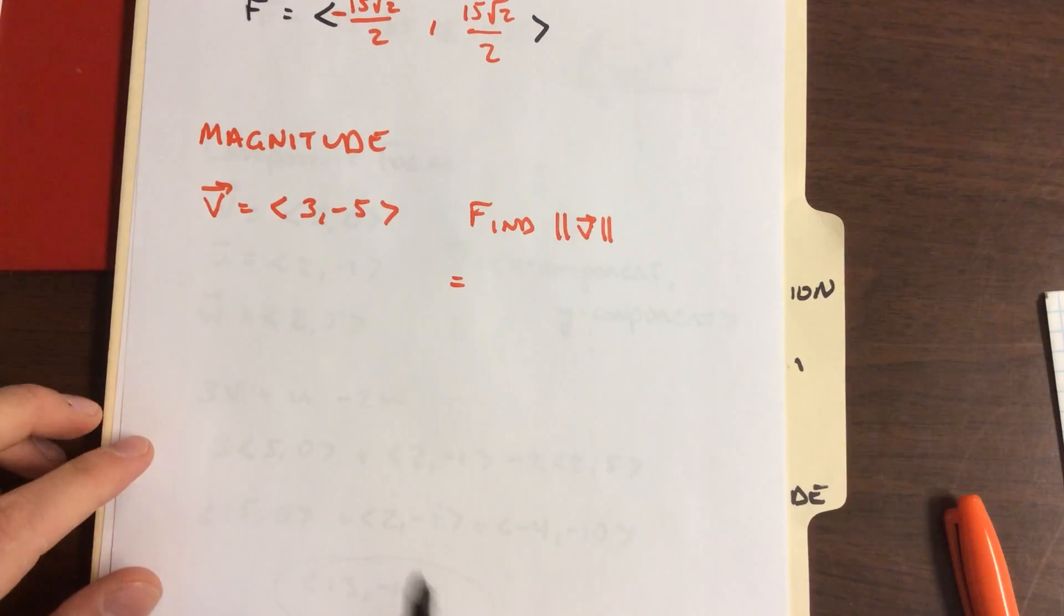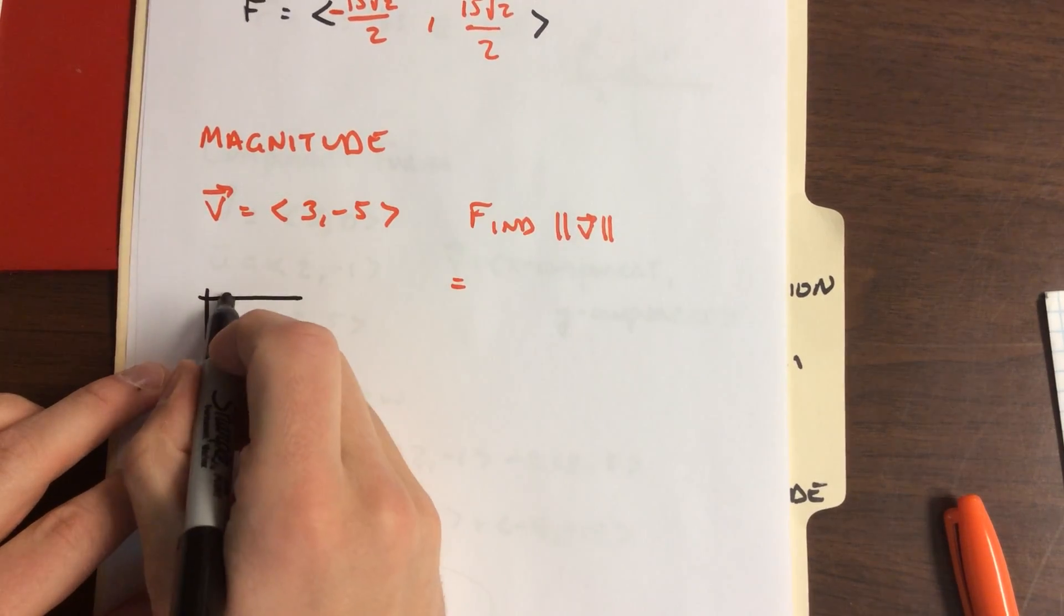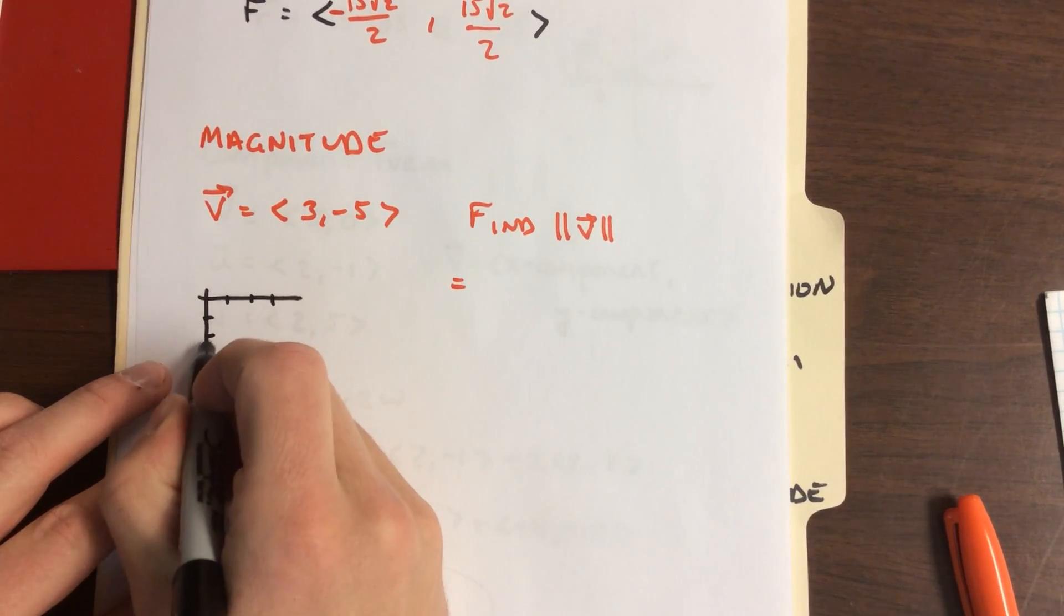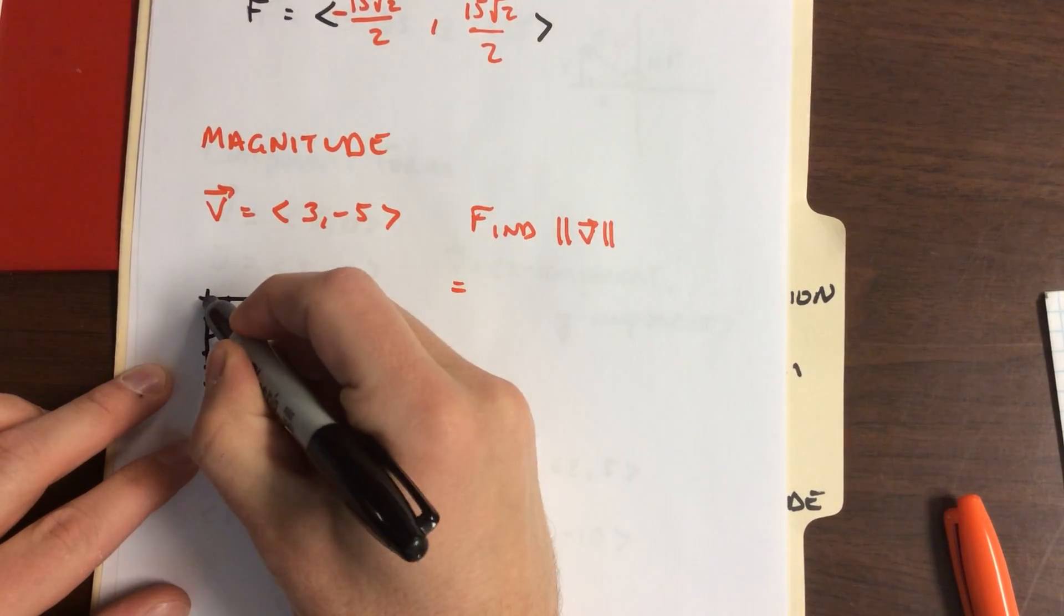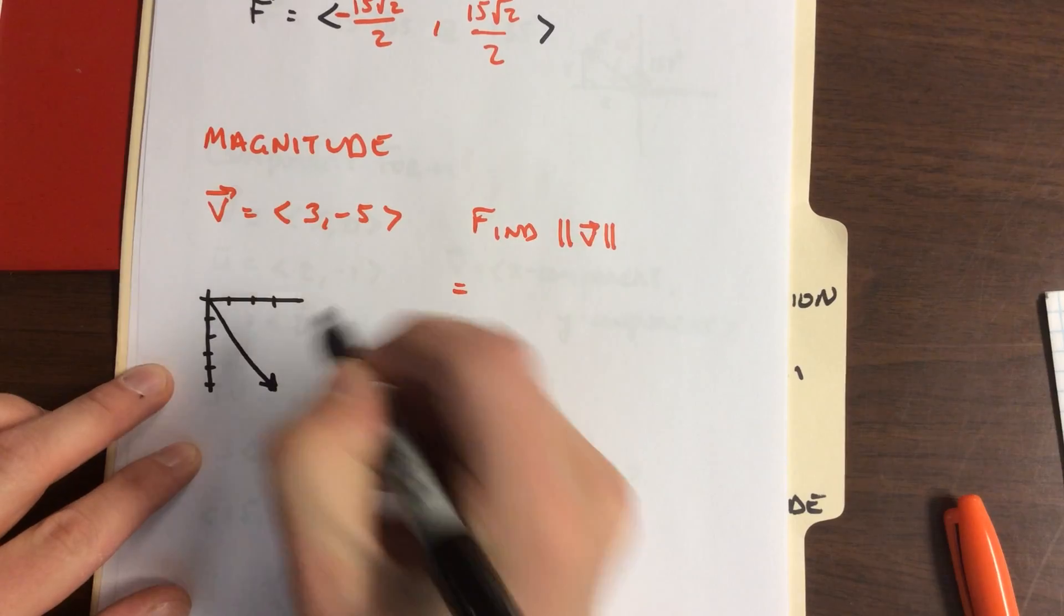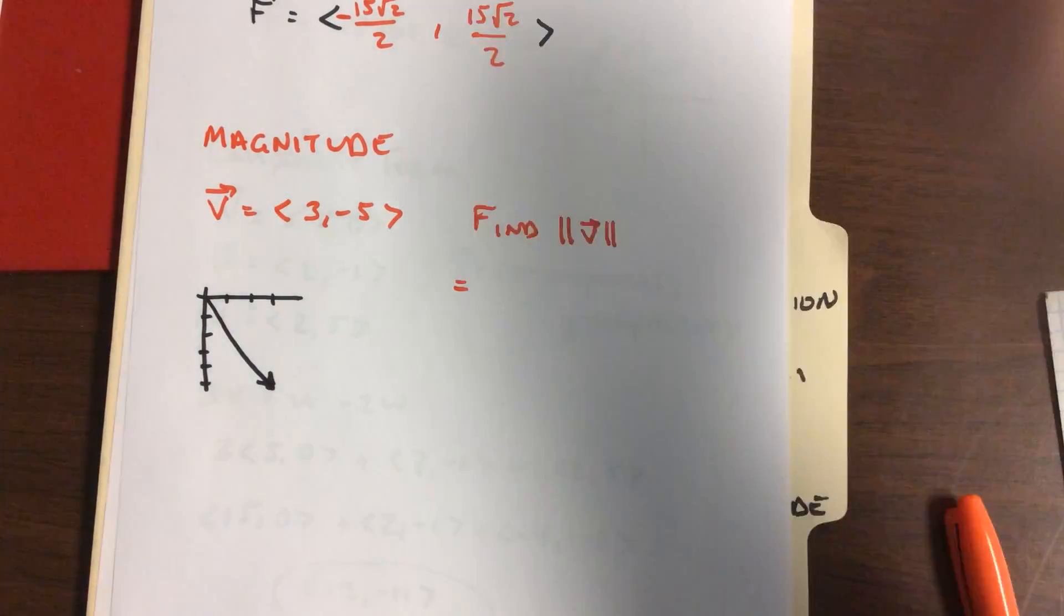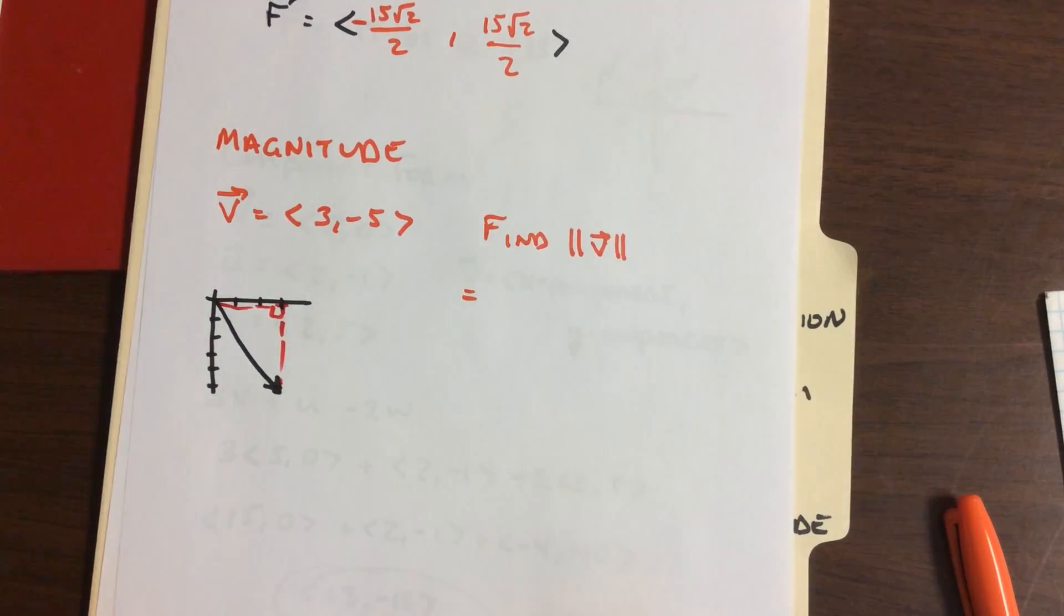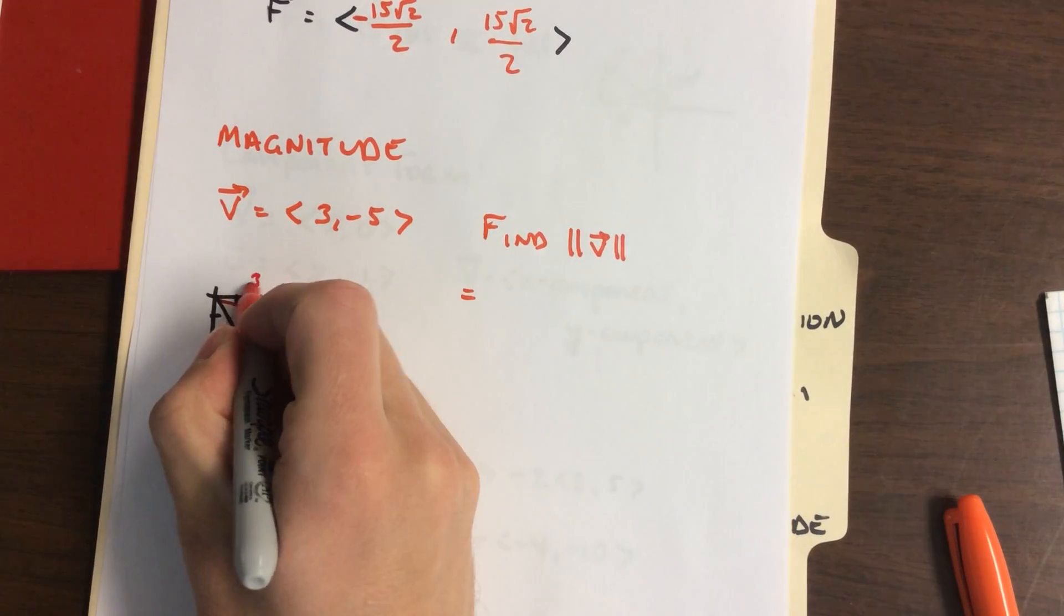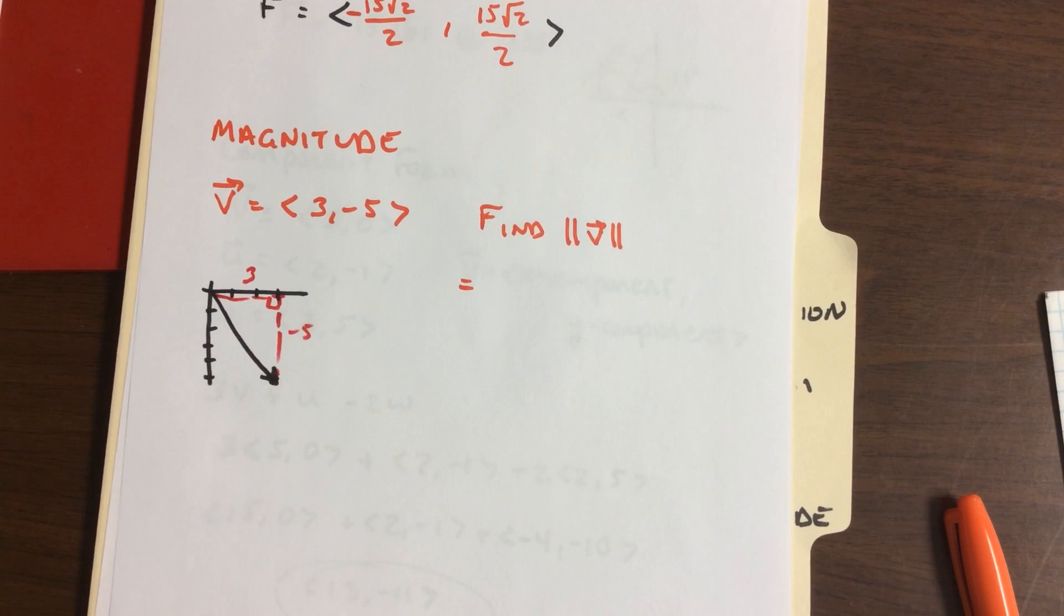Let's graph it. We're going to draw a triangle. So <3, -5> is going to be that vector. Draw a triangle. We've got a right triangle. We've got 3, we've got -5.